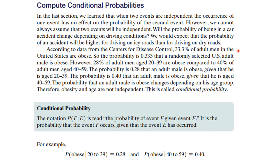Another more statistical example: according to data from the CDC, 33% or one-third of adult men in the United States are obese. So the probability is 0.333 that a randomly selected U.S. adult male is obese. However, 28% of adult men aged 20 through 39 are obese compared to 40% of the adult men aged 40 through 59. So the probability is 0.28 that an adult male is obese given that he is in the lower age bracket, and the probability is 40% given that he's in the upper age bracket. So the probability that an adult male is obese changes depending on his age group. Therefore, obesity and age are not independent.